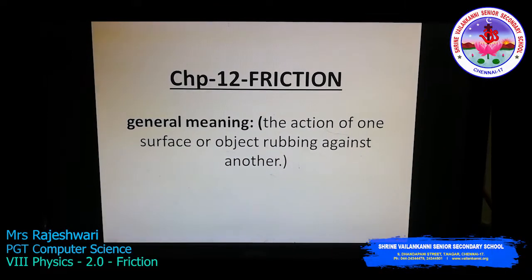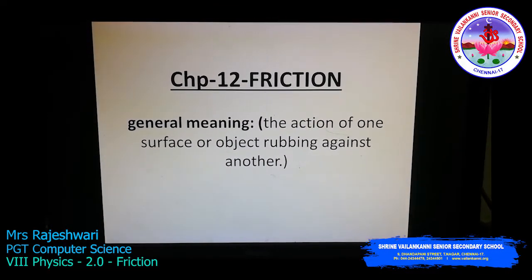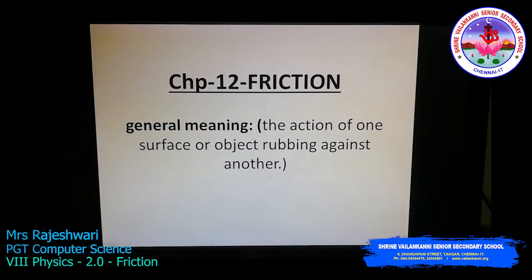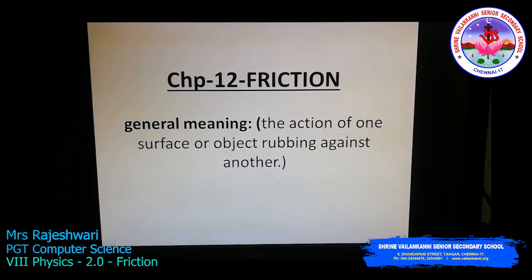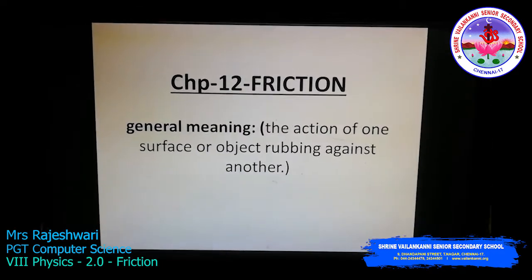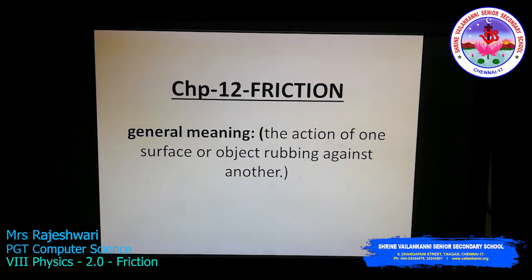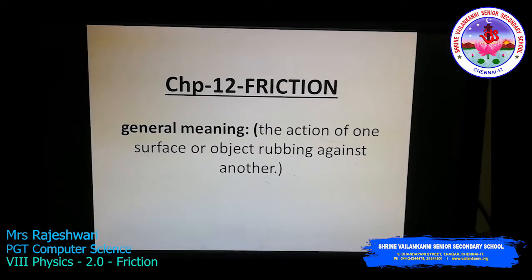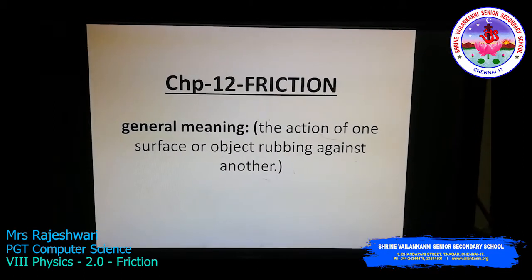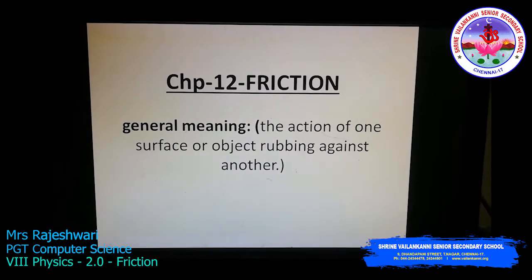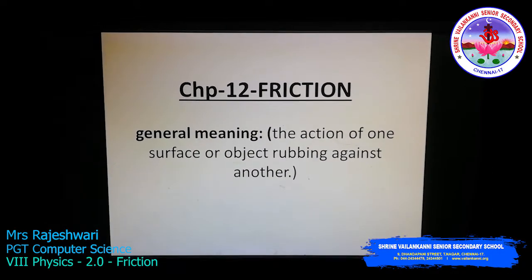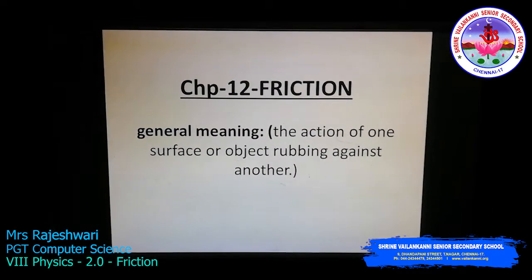Hello children, in today's class we are going to discuss about a new chapter: friction. Friction is the action of one surface or object rubbing against another. For example, if you rub your hands, it will produce heat. To escape from the cold you just rub your hands to feel warmer. Similarly, when you strike a matchstick on a rough surface, a flame is produced — friction plays a role there too.